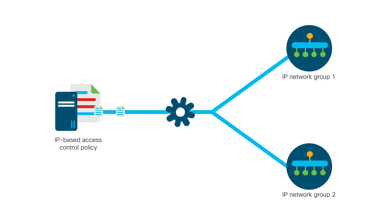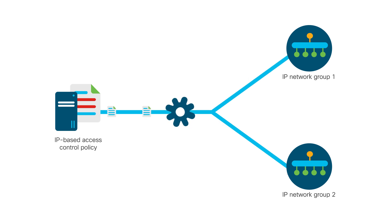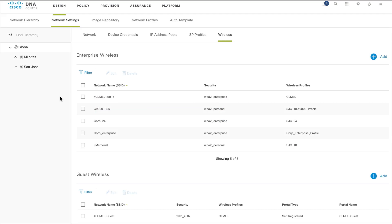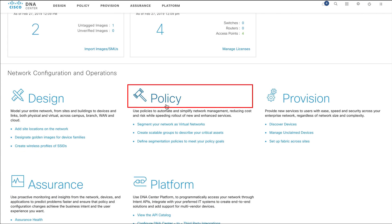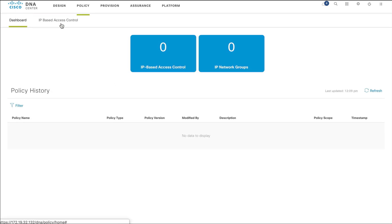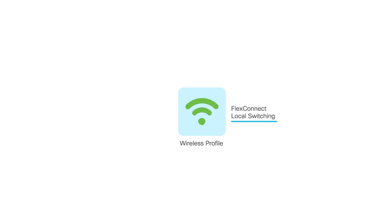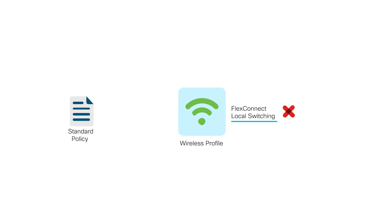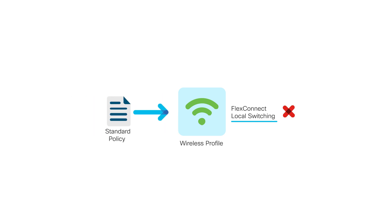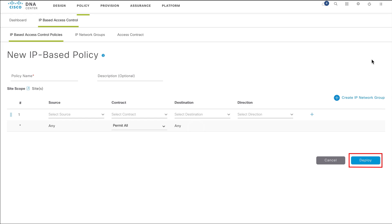The last step is to create an IP-based access control policy to filter traffic between IP network groups. On the Cisco DNA Center homepage, go to Policy, IP-based access control, and from the IP-based access control policies, click Add Policy. If you have selected FlexConnect Local Switching in the wireless profile, a FlexConnect policy is added; if not, a standard policy is added. Click Deploy.